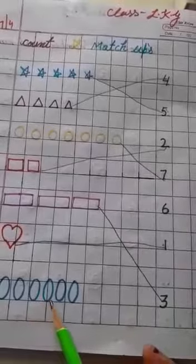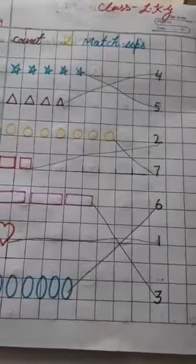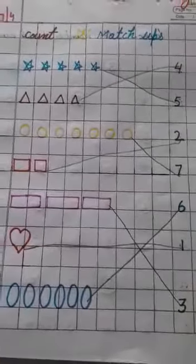One, two, three, four, five, six. We match six. This activity is count and match.